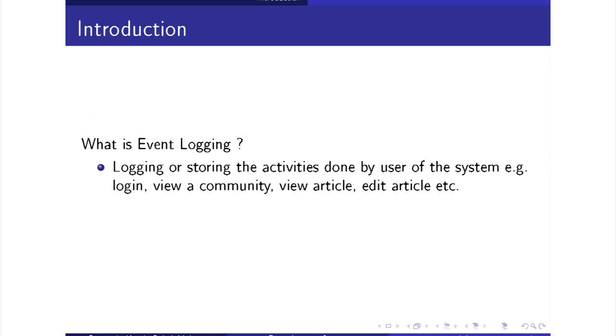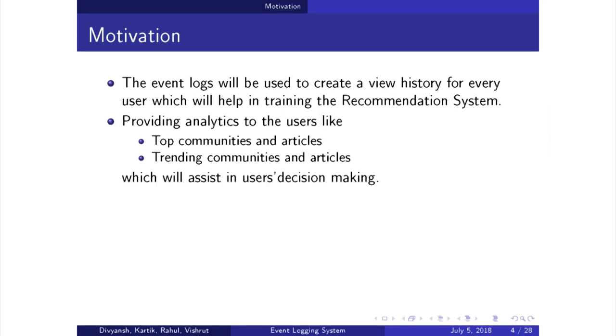Event logging is basically capturing all the activities of a user and storing them so that they can be usable further. The basic motivation behind using event logging is to capture events so they can be used by the recommendation system to give recommendations. Another reason is to provide analytics to the user that will assist them in decision-making — whether they want to join a community by seeing the top communities, top trending articles, and popularity of a community over time.